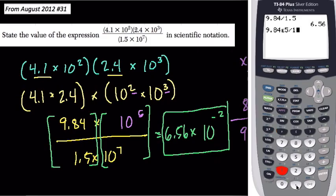Divided by 1.5, and again in scientific notation: 2nd, EE, so that's times 10 to the power 7. Press enter, and we get the answer 0.0656.